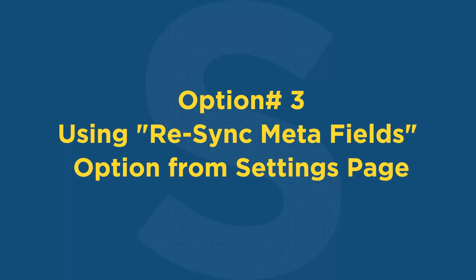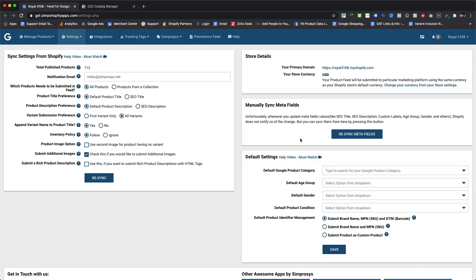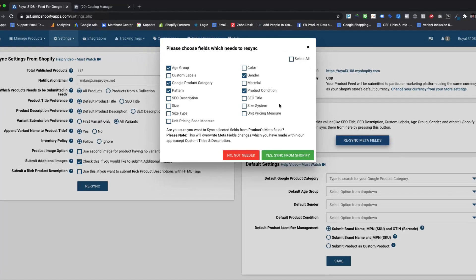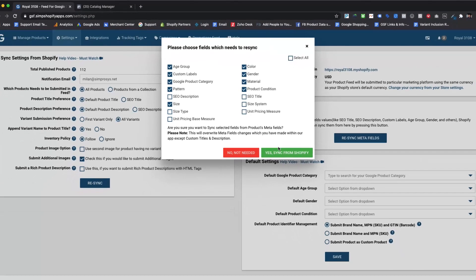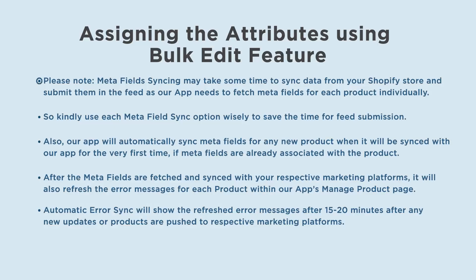The third option is syncing meta fields for the entire store using the Re-sync Meta Fields option from our app settings page. As you can see, you just need to press the Re-sync Meta Fields button and choose your options to sync values from Shopify meta fields. Please note, meta fields syncing may take some time as our app needs to fetch meta fields for each product individually, so kindly use each meta field sync option wisely to save time for feed submission.